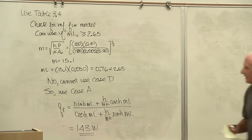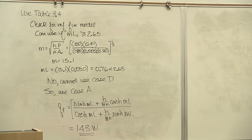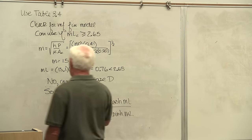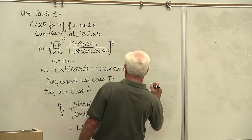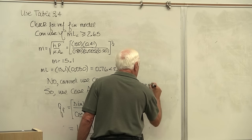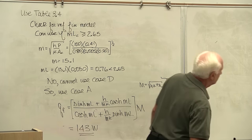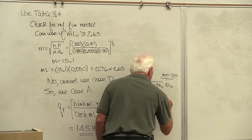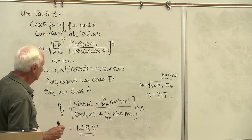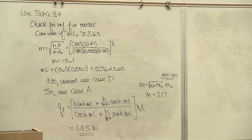One important note: in Table 3-4, the equation has capital M out in front. Capital M equals the square root of h·P·K·Ac times theta-B. Theta-B is 100 minus 20. Running the numbers through gives capital M equal to 217. So that worked out.